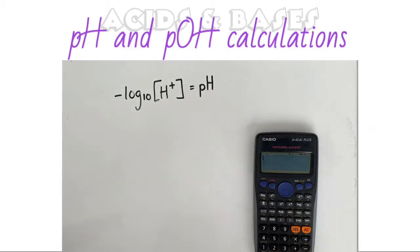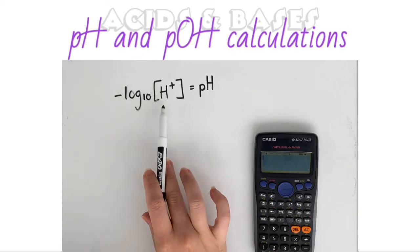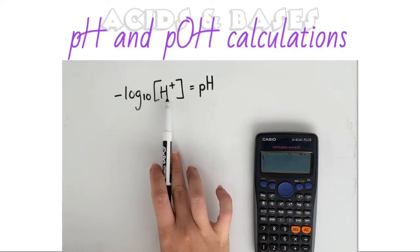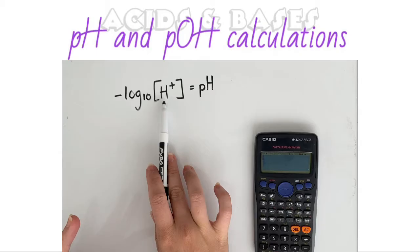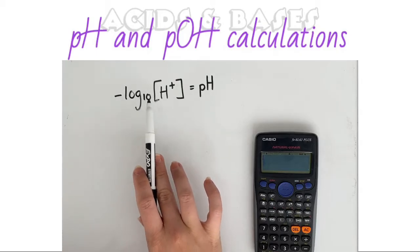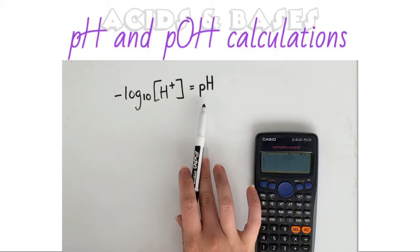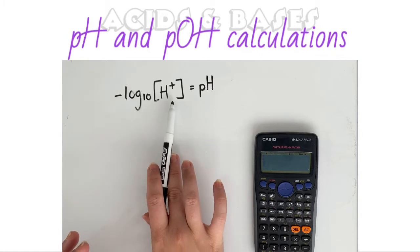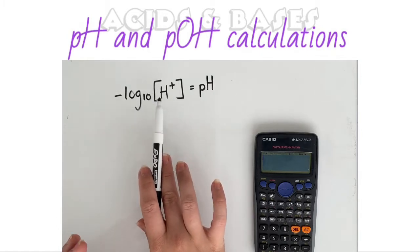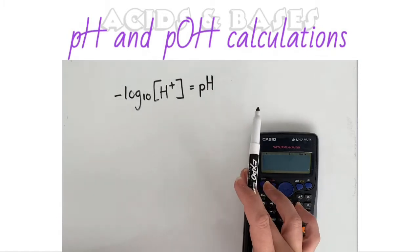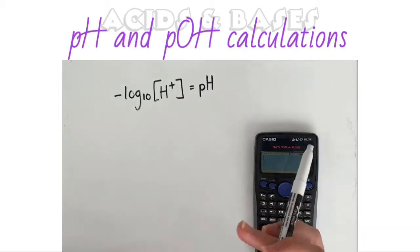Now I just want to consider this equation for a second because sometimes it's not that we will have the concentration of our hydroxide or hydronium ions, sometimes we will be given the pH and we'll need to work backwards to work out what is the concentration of the hydroxide or the hydronium or hydrogen ions.